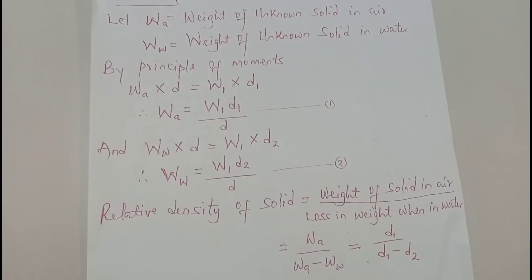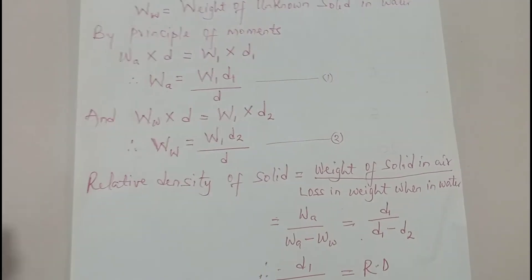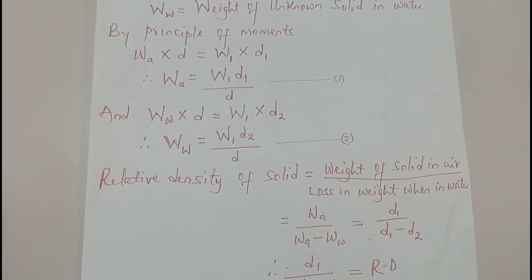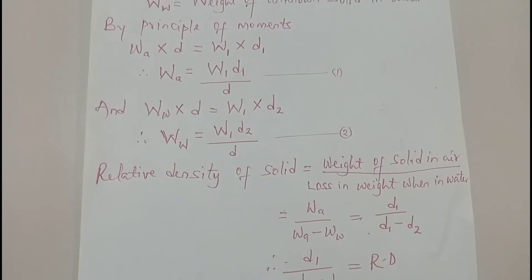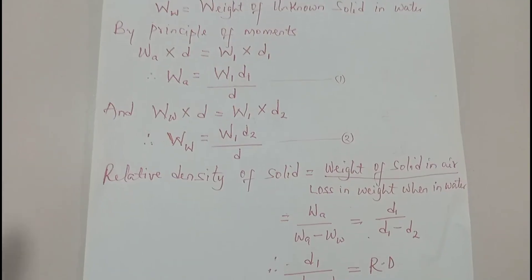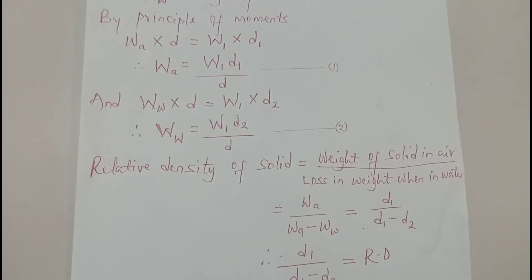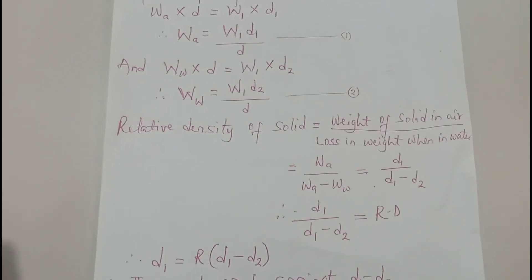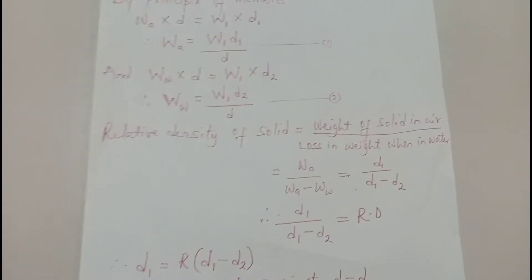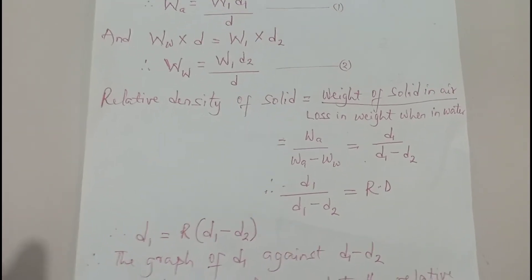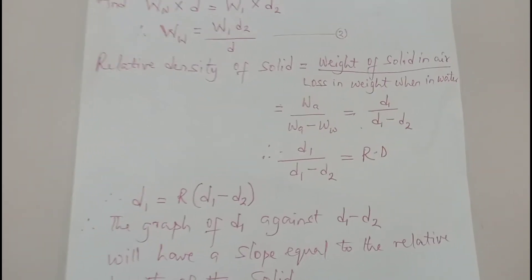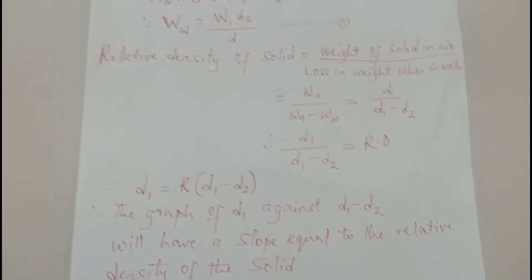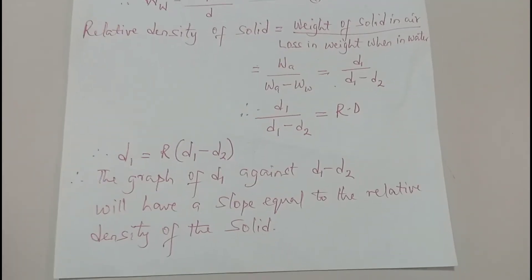Similarly for water: Ww = (W1 × d2) / d. Since relative density of a solid equals weight in air over the loss in weight when in water, that gives: RD = Wa / (Wa − Ww) = d1 / (d1 − d2). Cross-multiplying confirms that the slope of a graph of d1 against (d1 − d2) is equal to the relative density of the solid.